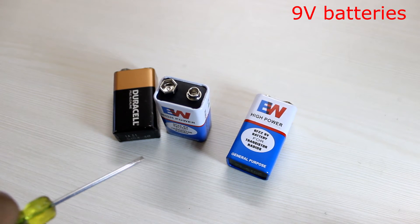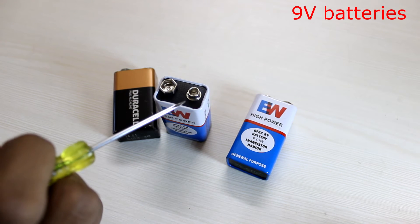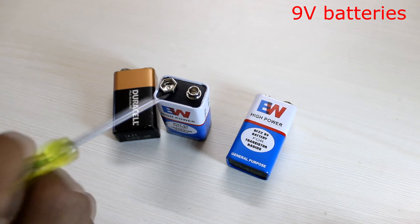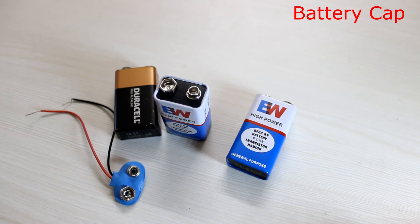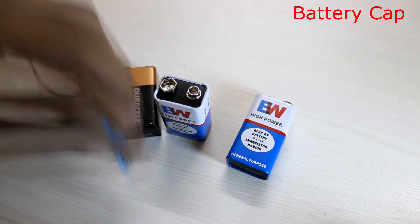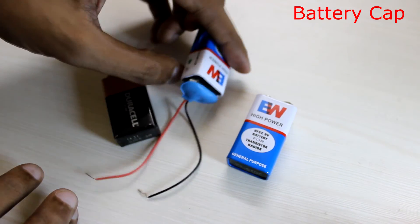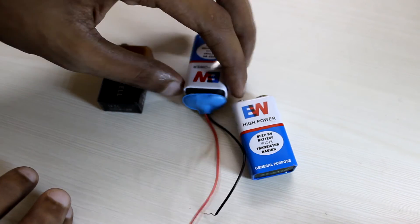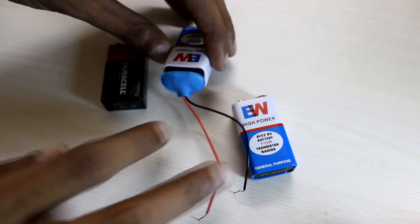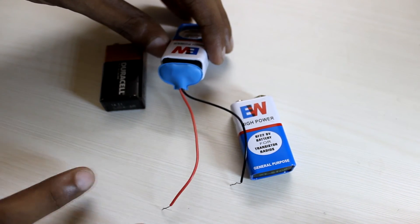These are a few 9V batteries that you can use to power your circuits. The round pin corresponds to positive and the hexagonal to negative. This is a battery cap. Let's plug it onto the battery first. We can use a battery cap like this to get the potential difference onto the wires. The red is positive voltage and black is negative.